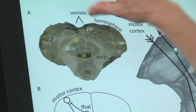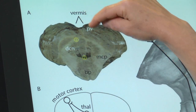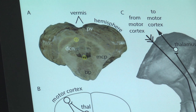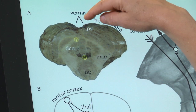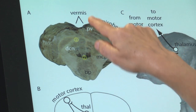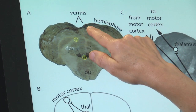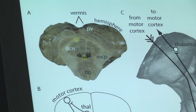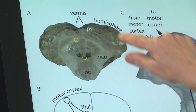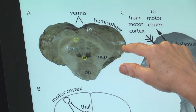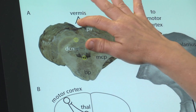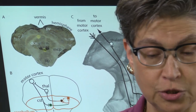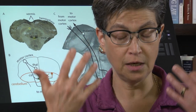You can see that there are two hemispheres and a central region called the vermis. In fact there are three regions: the vermis, the near part of the hemisphere called the paravermis — meaning next to the vermis — and then the lateral part of the hemisphere, the lateral lobes or lateral hemispheres.